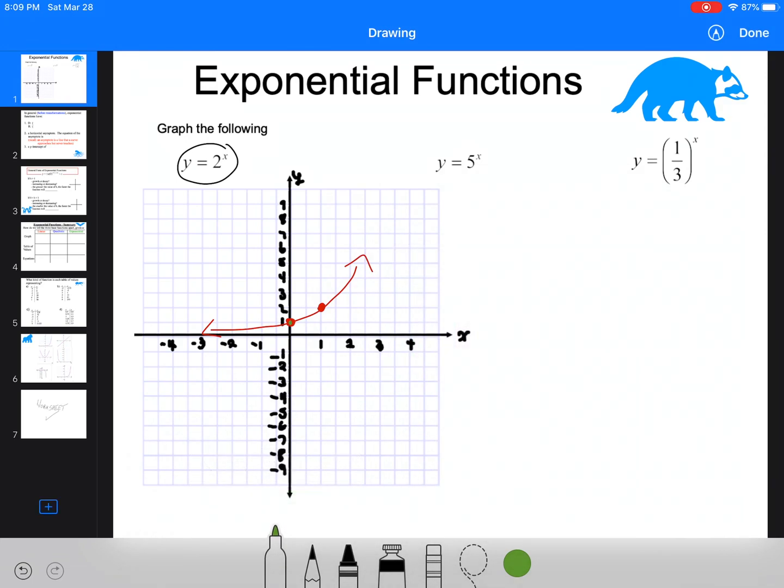If we were doing the five there, we're still going to have a point there, and then five to the one just goes right there. So when we graph this one, it's going to be something like that.